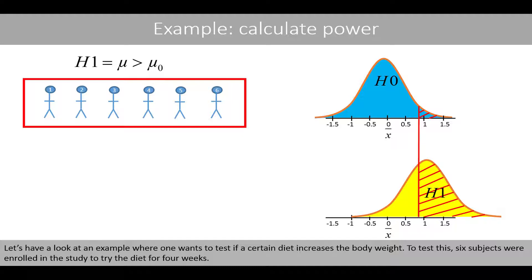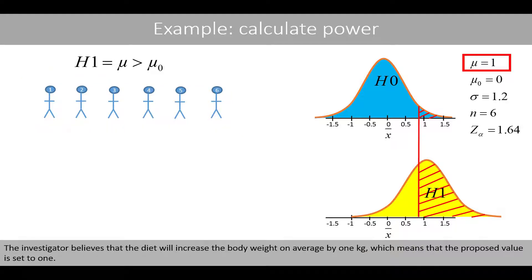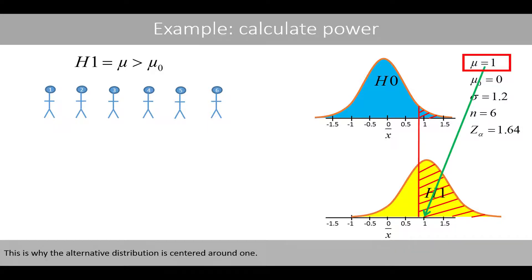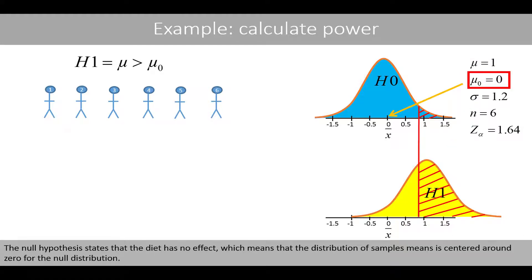To test this, six subjects were enrolled in the study to try the diet for four weeks. The investigator believes that the diet will increase the body weight on average by one kilo, which means that the proposed value is set to one. This is why the alternative distribution is centered around one. The null hypothesis states that the diet has no effect, which means that the distribution of sample means is centered around zero for the null distribution.